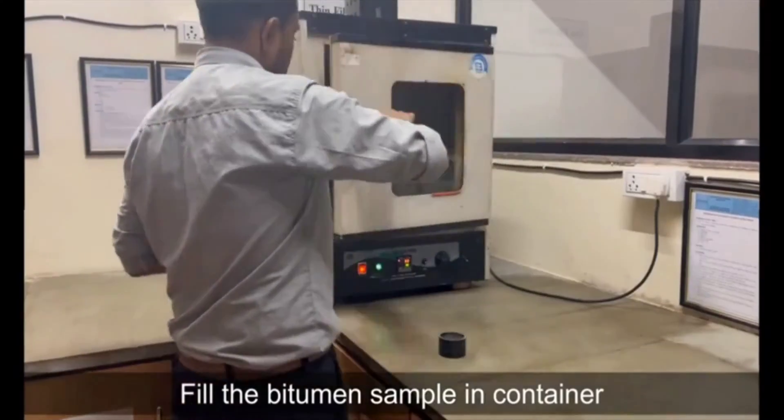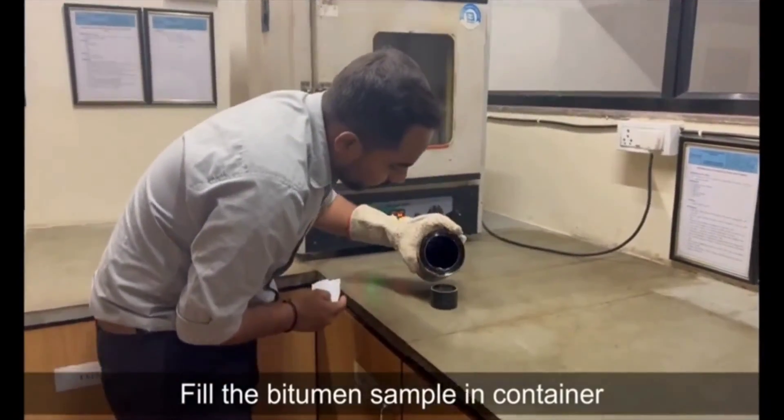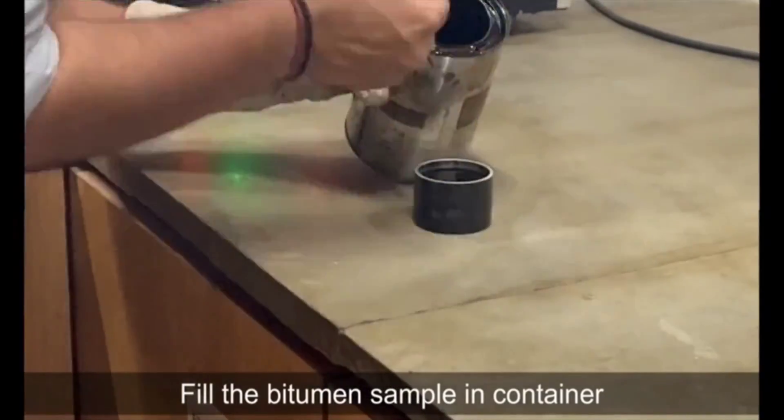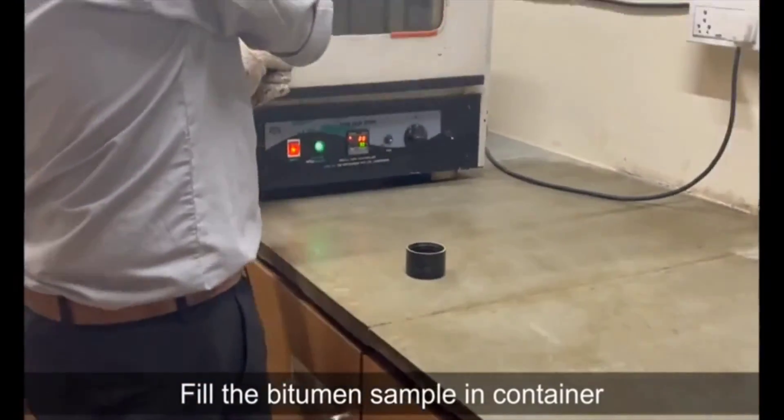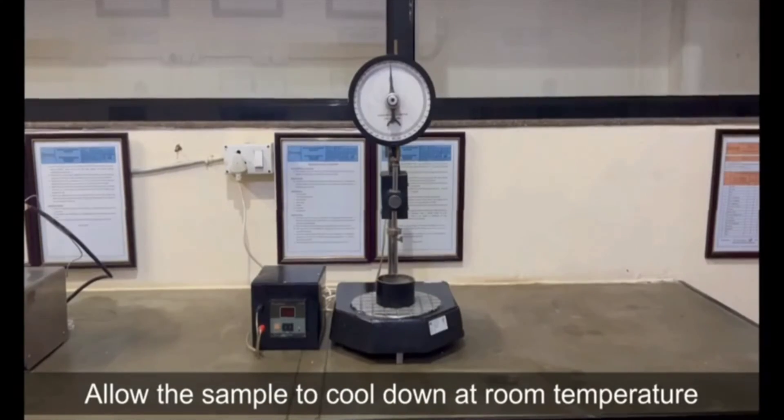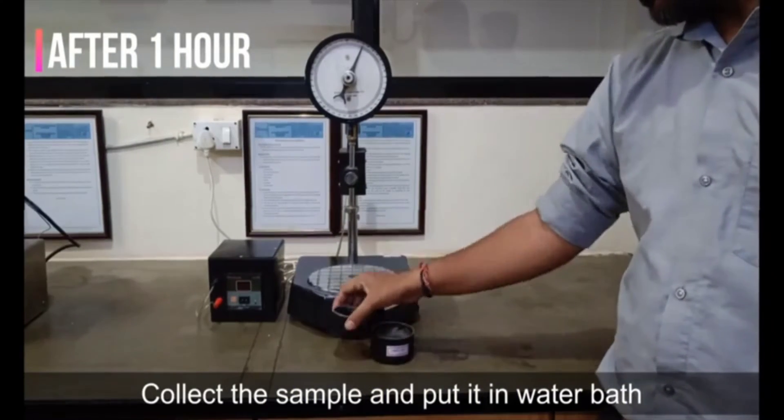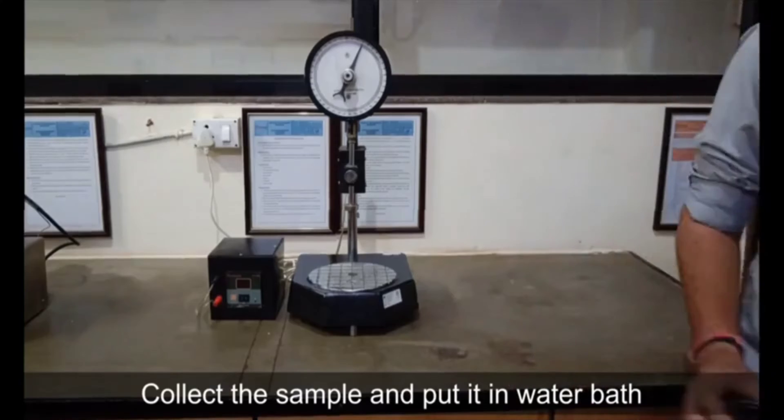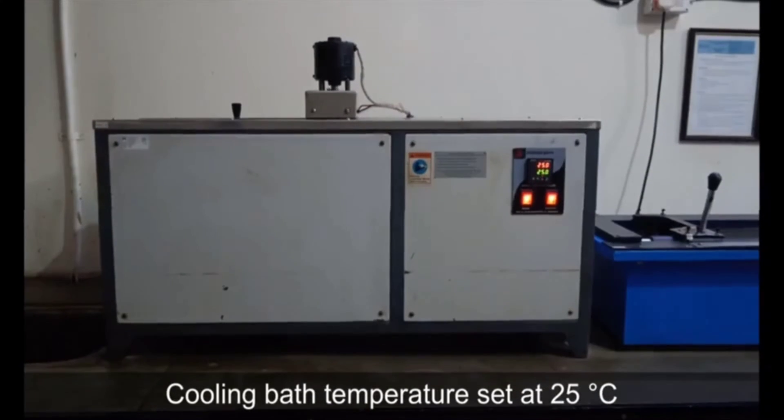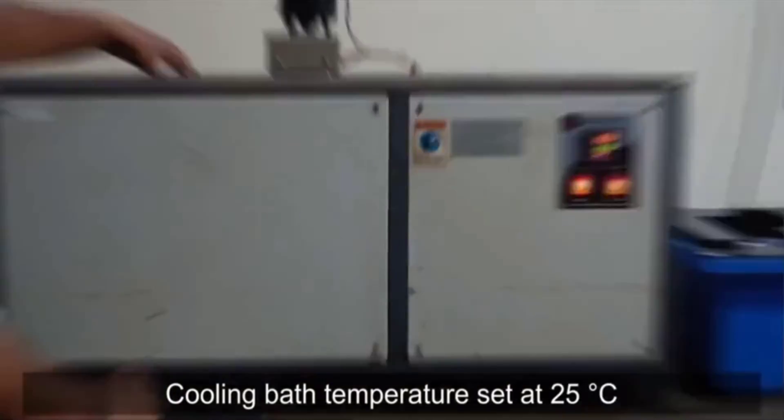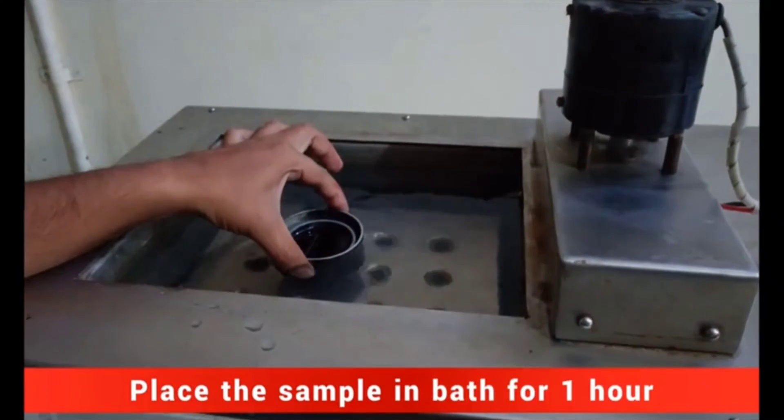Fill the bitumen sample in penetration container. Allow the bitumen sample to cool down at room temperature. After one hour, collect the sample and put it in water bath. Cooling bath temperature set at 25 degrees Celsius. Place the sample in bath for one hour.